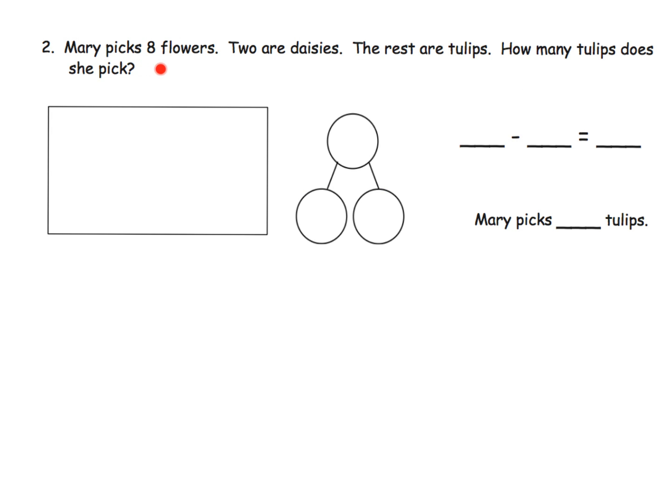So now we have Mary, and she picks eight flowers. So let's model that. One, two, three, four, five, six, seven, eight. And you can see I'm following that 10 frame format. Two of them are daisies. So we want to show that two of them are daisies. There's two. And it says the rest are tulips.